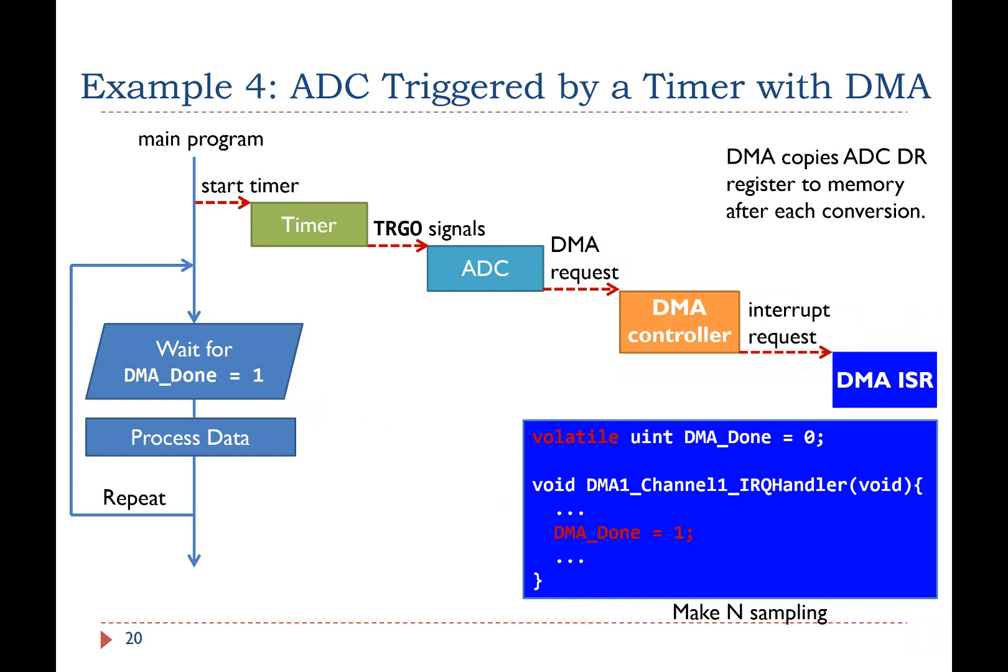A more efficient method is to use direct memory access, DMA. When a conversion completes, the ADC hardware generates a DMA request to the DMA controller. The DMA controller responds to the request by automatically copying the value of the ADC data register to the memory buffer without involving the processor. After the DMA controller makes a specified number of DMA transfers, the DMA module can generate an interrupt request to inform the processor that the DMA has completed. The processor responds to the DMA interrupt request by executing the DMA interrupt handler. The DMA interrupt handler can set the global flag DMA done to true to inform the main program that data in the buffer are ready to be processed.